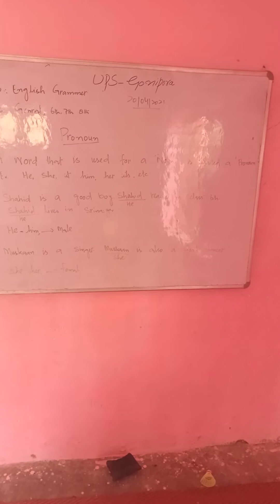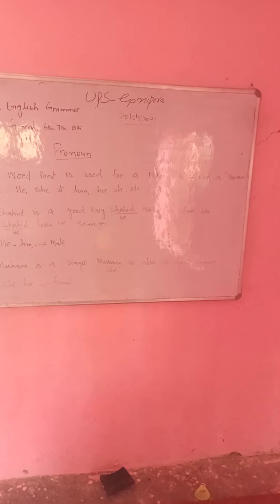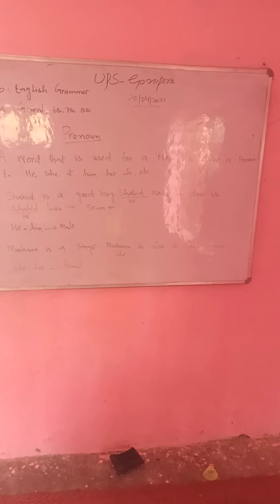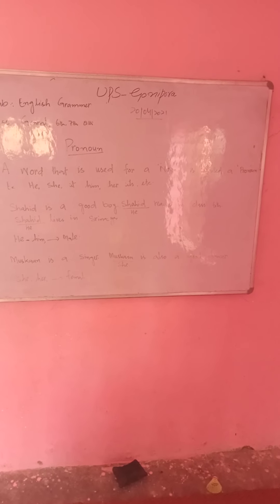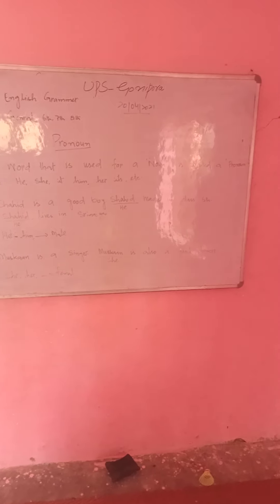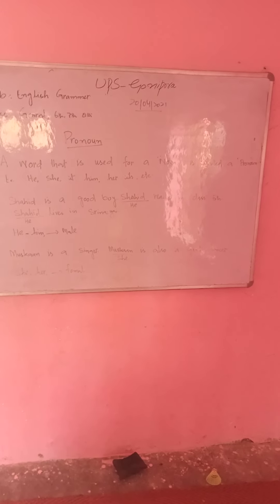So the definition of pronoun is: a word that is used for a noun is called a pronoun. For females we use 'she' or 'her,' and for males we use 'he' or 'him.' Examples of pronouns are: he, she, it, him, her, its, etc. Now you understand what a pronoun is and what it is used for.